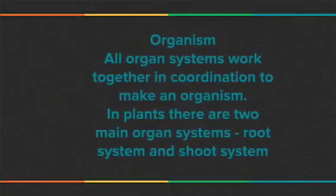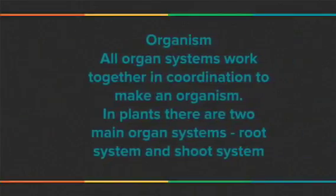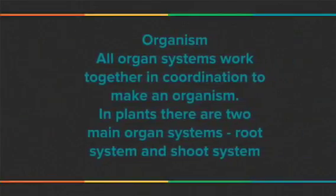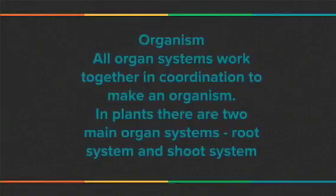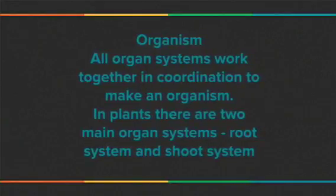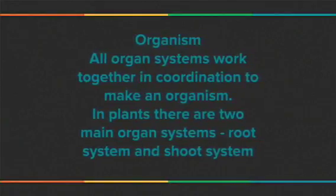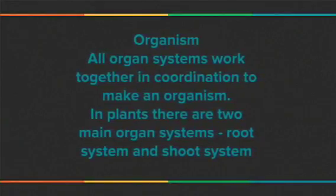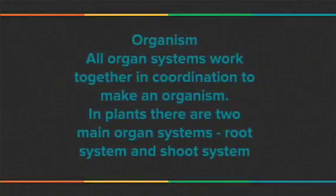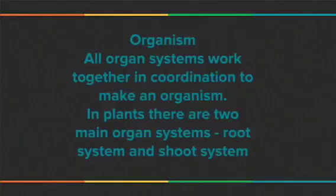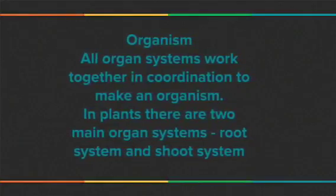Organism: all organ systems work together in coordination to make an organism. In plants, there are two main organ systems: root system and shoot system.